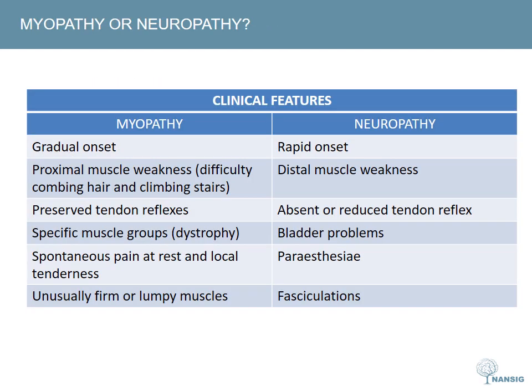Let's examine some important differences between myopathies and neuropathies. Although clinical signs may not be clear cut, some aspects of the presentation may help to differentiate between these different pathologies. Muscle disorders tend to be more gradual in onset and present with proximal muscle weakness, affecting activities of daily living such as hair combing and climbing stairs. Importantly, tendon reflexes are preserved, and specific muscle groups may be affected.